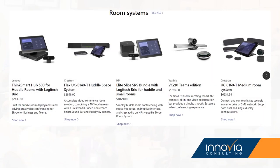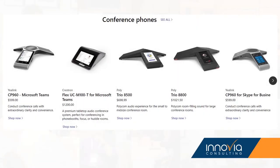Besides desk phones, you've also got room systems with video cameras that are certified for use with Microsoft Teams, and conference phones as well. Most of the time, if I need a handset, I will transfer the call to my cell phone and use my cell phone's Bluetooth headset. A really flexible solution that has all the features of an enterprise-class phone system and can be run on whatever hardware you have. Unfortunately, most existing phones for Mitel or SureTel systems probably won't be Microsoft Teams certified.